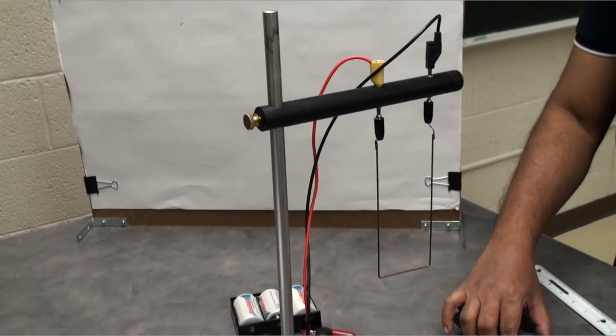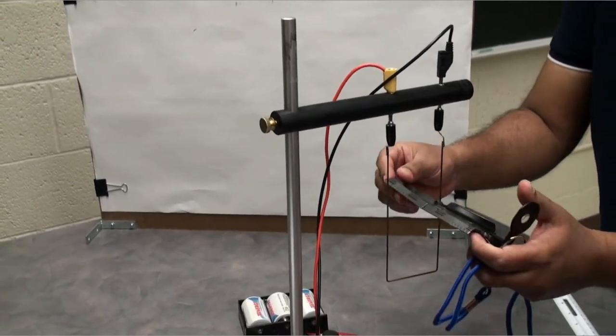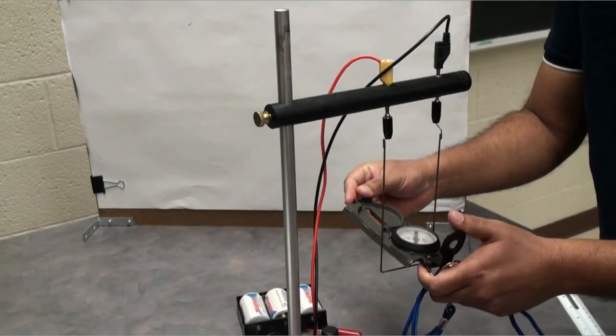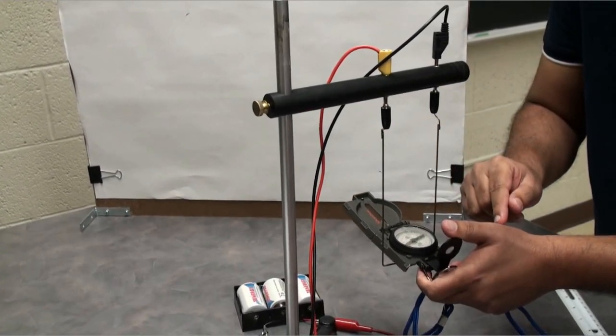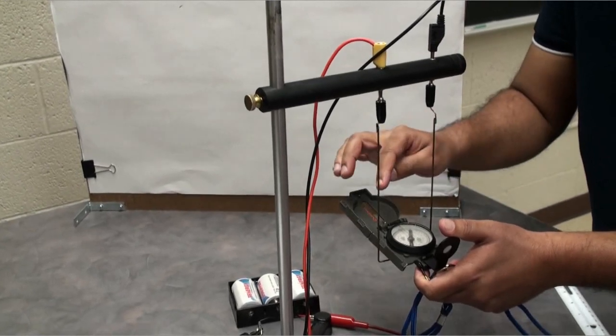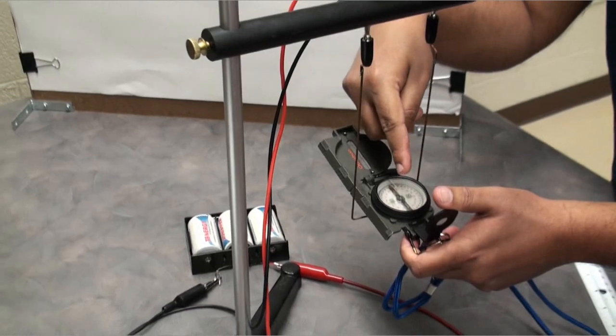So now what I am going to do is first I am going to find the magnetic field direction inside the loop. So when I switch on the battery, the north aligns out of the loop.